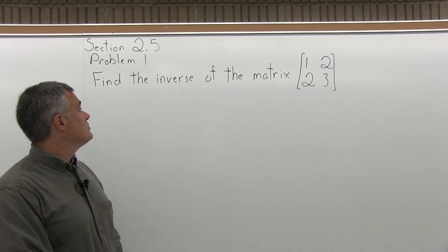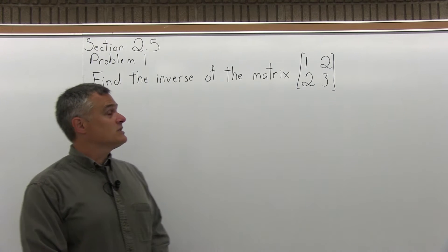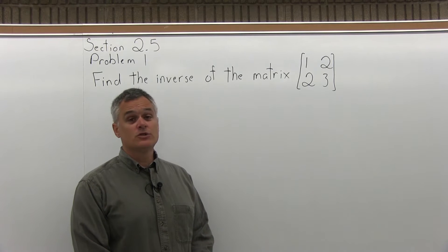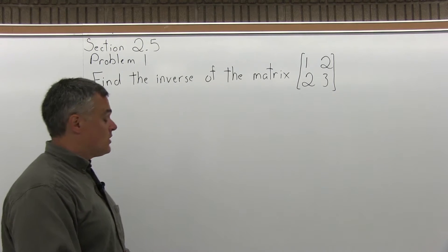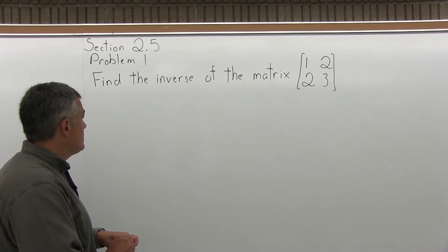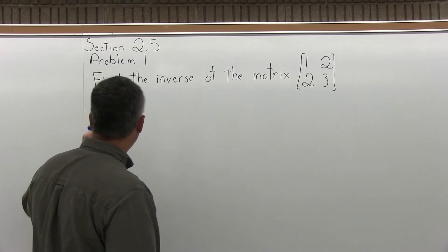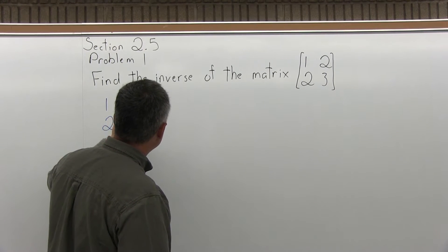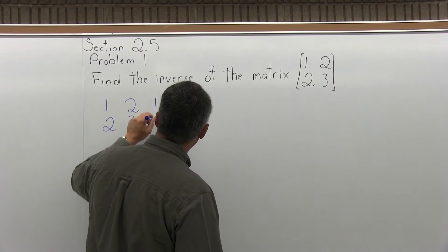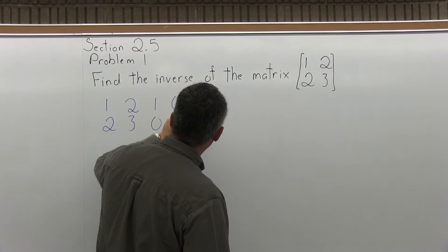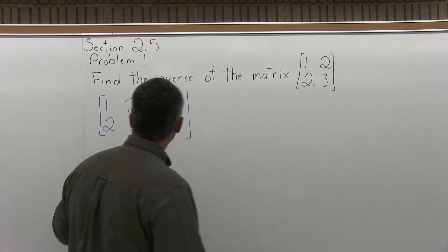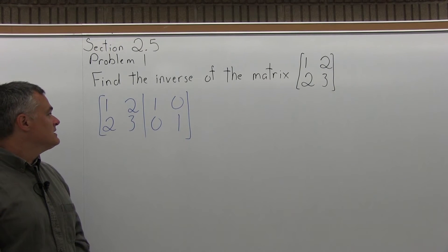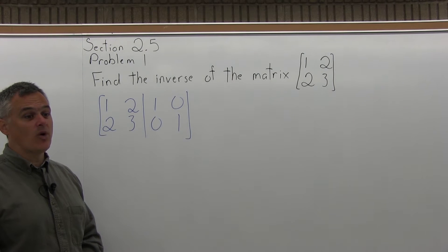This is problem number 1 from Section 2.5. It says find the inverse of the matrix, and it's a smaller matrix. The top row is 1, 2, and the bottom row is 2, 3. All the entries are positive.